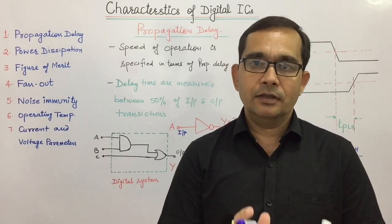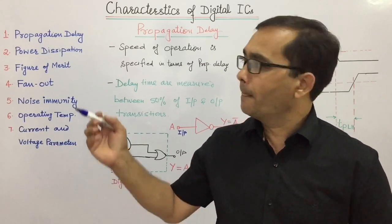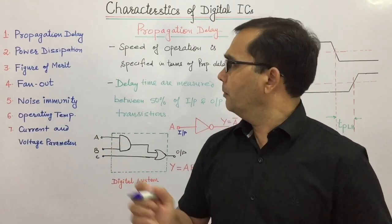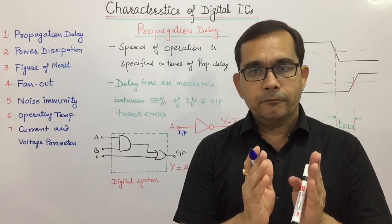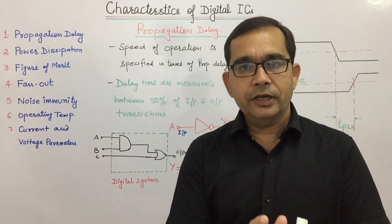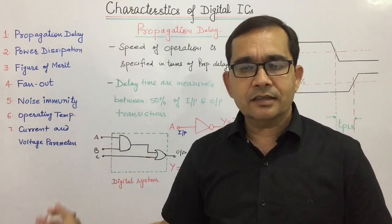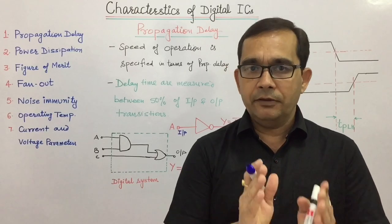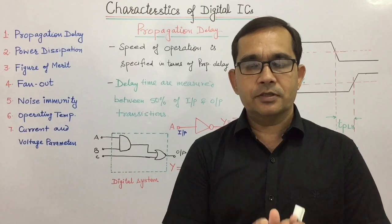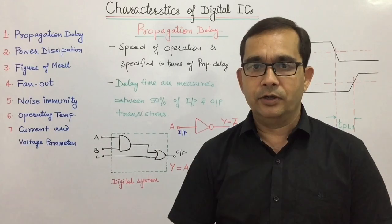The most important parameters used to evaluate and compare these logic families are: propagation delay, power dissipation, figure of merit, fan out, noise immunity, operating temperature, and current and voltage parameters. These are the different parameters by which we will compare the different logic families. In this presentation, we will learn about all these characteristics and parameters.